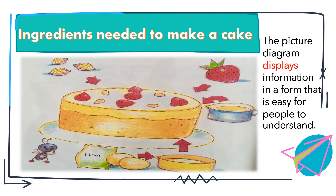The next example for the picture diagram shows the ingredients needed to make a cake. The picture diagram displays information in a form that is easy for people to understand.